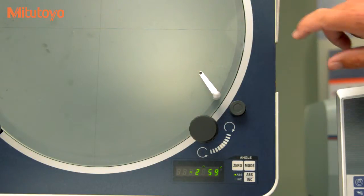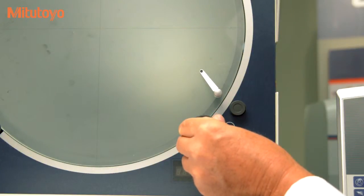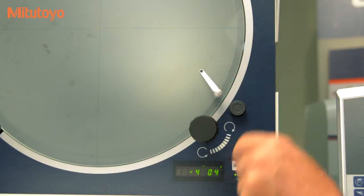The digital protractor can display in absolute or incremental units and the screen can be locked to prevent rotational errors.